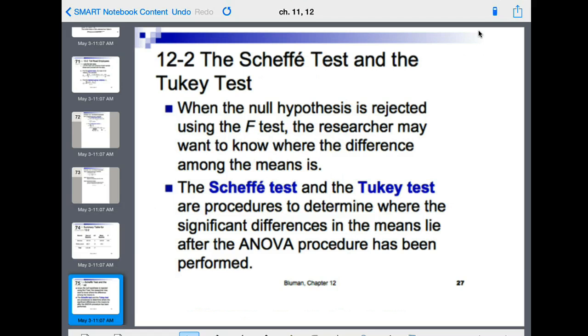When the null hypothesis is rejected using the F test, the researcher may want to know where the difference among the means is. The Scheffé test and the Tukey test are procedures to determine where the significant difference in the means lie after the ANOVA procedure has been performed.